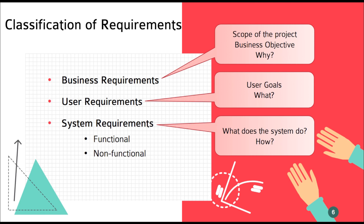When we talk about classification of requirements, there are three types: business requirements, user requirements, and system requirements. Business requirements talk about the scope and objective of the project — why do we need this software or system. User requirements answer the question of what — they are about user-level goals. System requirements are more detailed, describing how and what the system does, and they are further classified into two types: functional and non-functional.